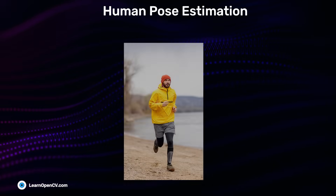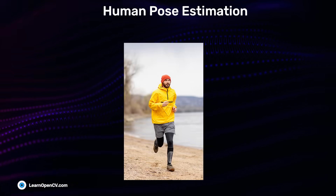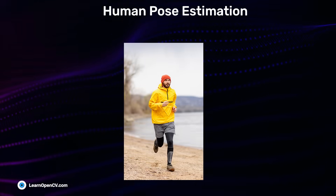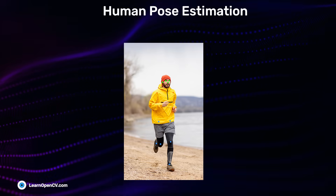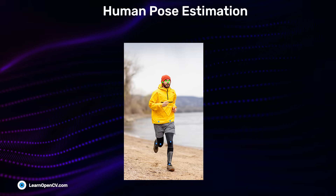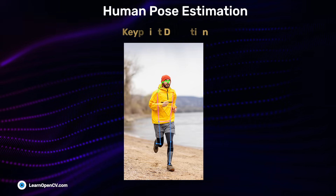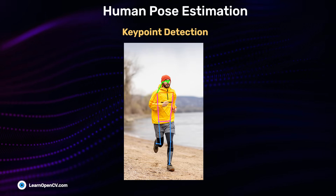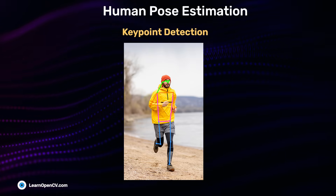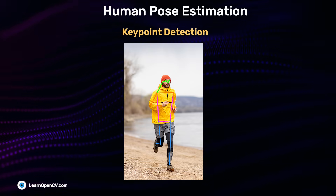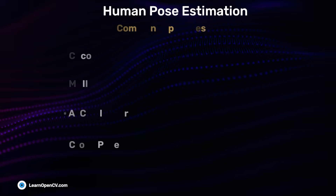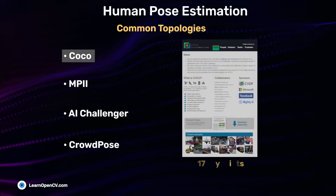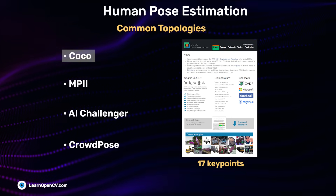What is Human Pose Estimation? It is the task of predicting the location of major joints of the human body, also referred to as keypoint detection. There are many datasets for keypoint detection with different topologies. The most common is the COCO dataset, which has 17 keypoints.